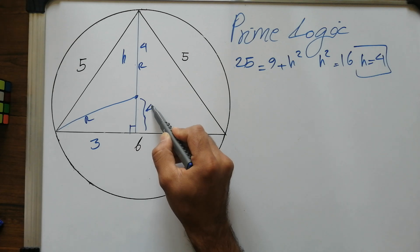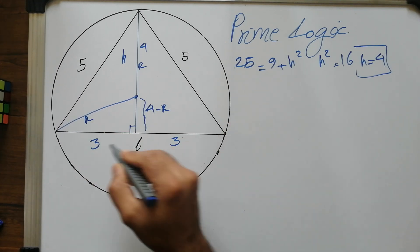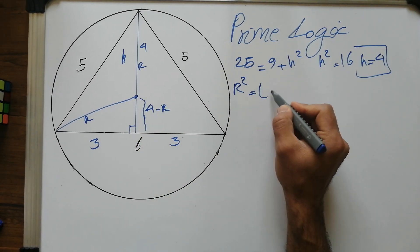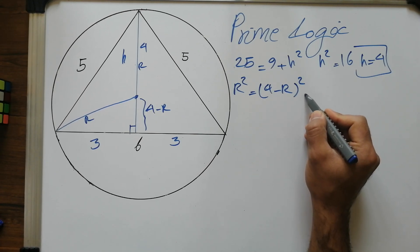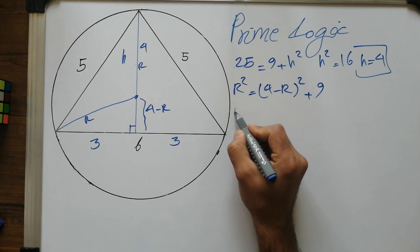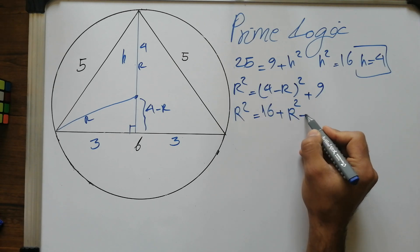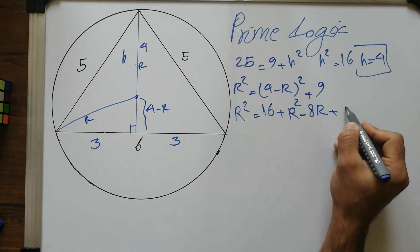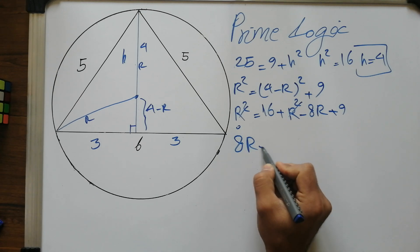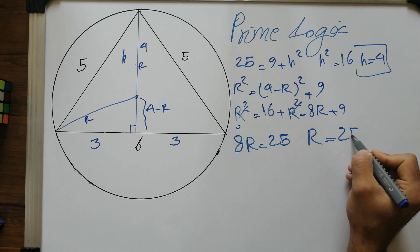For this smaller right triangle, we apply the Pythagorean theorem again: r² = (4 − r)² + 3². Expanding: r² = 16 + r² − 8r + 9. Canceling r² from both sides gives 8r = 25, therefore r = 25/8.